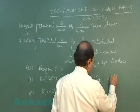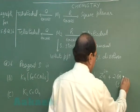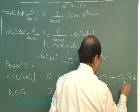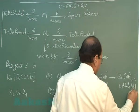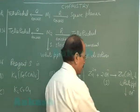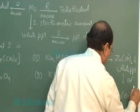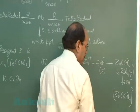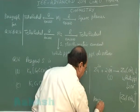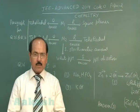Zinc hydroxide dissolves in excess KOH, forming the zincate ion. So the correct answer for question 36 is option D. We now move on to the next question, question number 37.